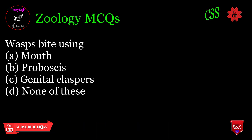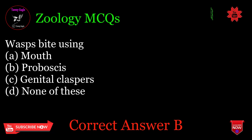Wasps bite using: A. Mouth, B. Proboscis, C. Genital claspers, D. None of these. Correct answer: B.